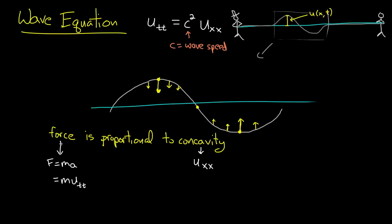And so what can we conclude from all this? Well, we know that force is proportional to u_tt. It's m times u_tt. Concavity, on the other hand, is simply u_xx. So the big conclusion here is that u_tt is proportional to u_xx.